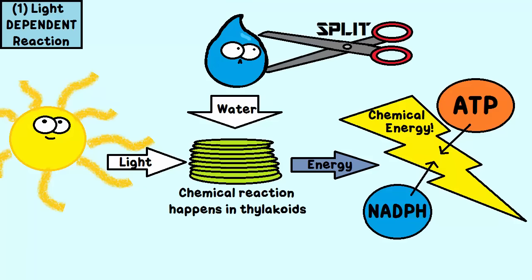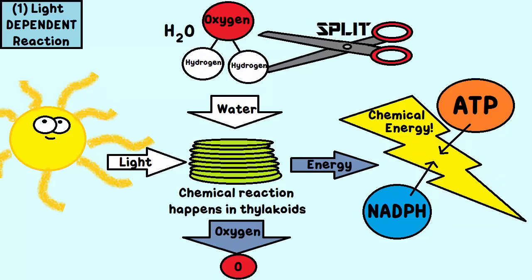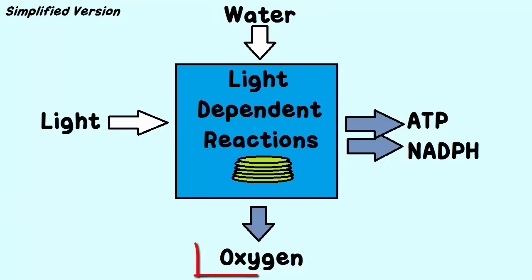During the light-dependent reaction, water, which is needed for this process to work, is split. That means if you think of the chemical formula for water, it's H2O, it is split so that you get electrons, protons, and oxygen. So oxygen is also a product of this reaction.